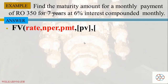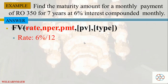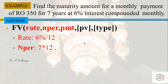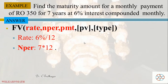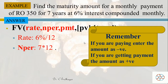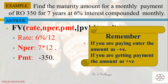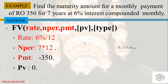The formula is FV(rate, NPER, PMT, PV, type). The rate is 6% divided by 12 since we are paying monthly. NPER is 7 multiplied by 12, which is the total number of payments for the period. Since we are making payments, PMT should be negative: minus 350 Riyals per month. The present value is 0 because we are not starting with any money in the account. Type is left blank.